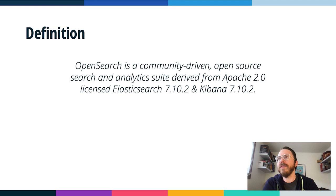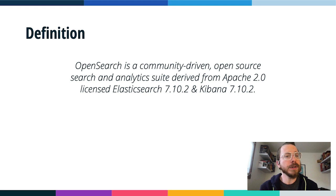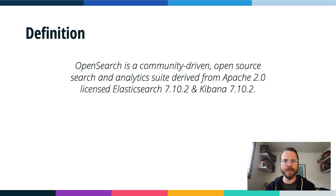Let's dive into the definition. OpenSearch is — and I'll read this verbatim because the words are important — a community-driven, open source search and analytics suite derived from the Apache 2.0 licensed Elasticsearch 7.10.2 and Kibana 7.10.2. Community-driven is a really important part of our project. We don't have a secret roadmap — we're trying to be as responsive as we can to the community.